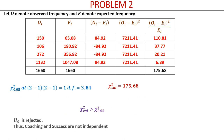Substituting the O and E values, we take the difference, square it, divide each by E, and get the total — that is the calculated chi-square value. Since we have two categories under each attribute, degrees of freedom = (2−1)×(2−1) = 1, giving a table value of 3.84. The calculated value is greater than 3.84, so H0 is rejected: coaching and success are not independent — they are associated.